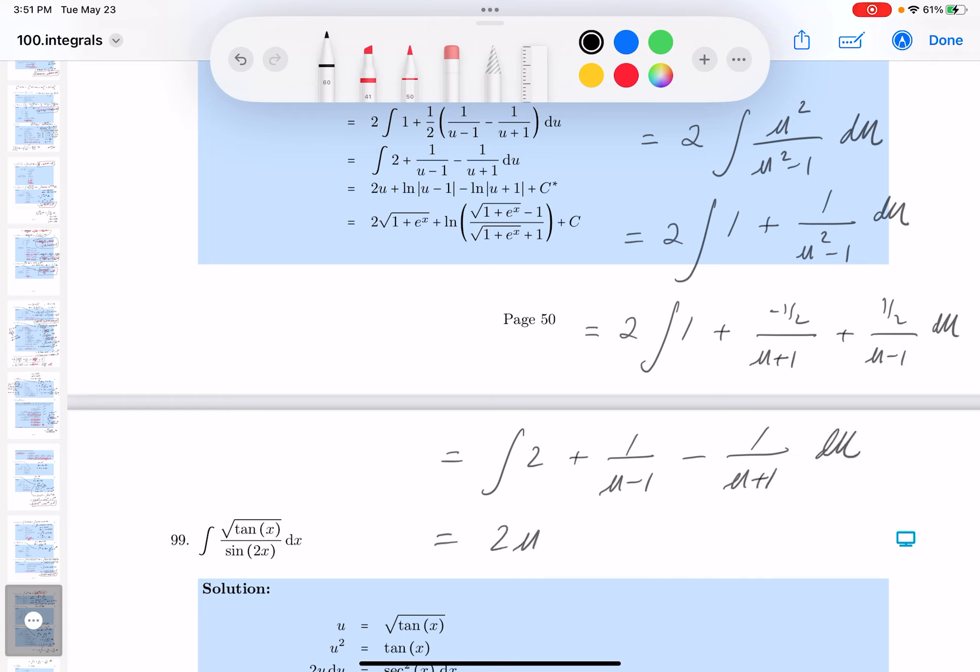This will be 2u plus the natural log absolute value of u minus 1. That's a star there, sorry about that.